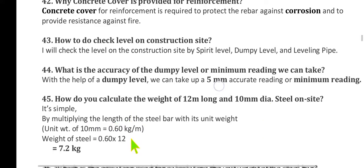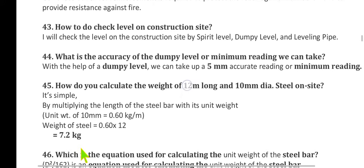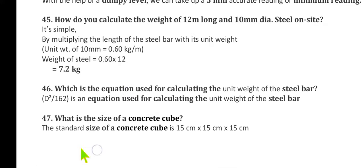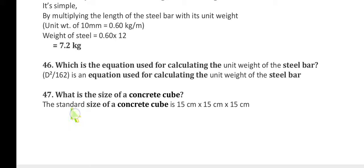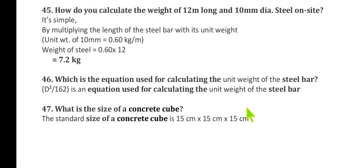Question 45: How do you calculate the weight of a bar — for example, a 10-meter long, 10 mm diameter steel bar? Multiply the length by the unit weight. The unit weight of 10 mm steel is 0.60 kg/m, so weight = 0.60 × 12 = 7.2 kg. Question 46: What is the equation for calculating the unit weight of steel bars? Using the MKS system: D² ÷ 162.162, where D is the diameter in mm. Question 47: What is the size of concrete cubes? The standard size is 15 cm × 15 cm × 15 cm.